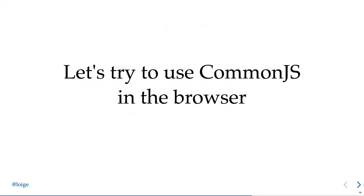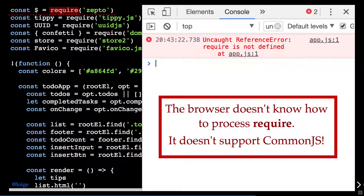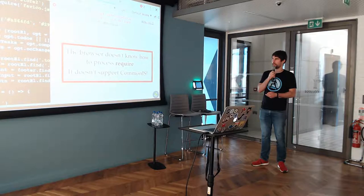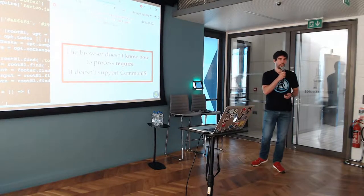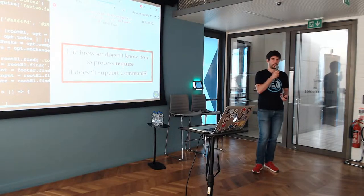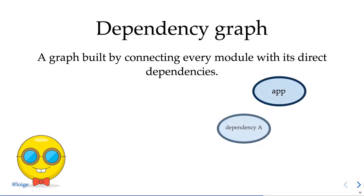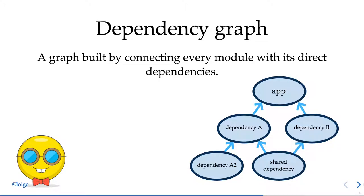If you try to use CommonJS in the browser, it immediately tells you 'I don't know what require is.' The browser doesn't support CommonJS — the keyword require means nothing to it. So we use a module bundler to take code using require and convert it into something the browser can understand. The first thing a module bundler does is build a dependency graph.